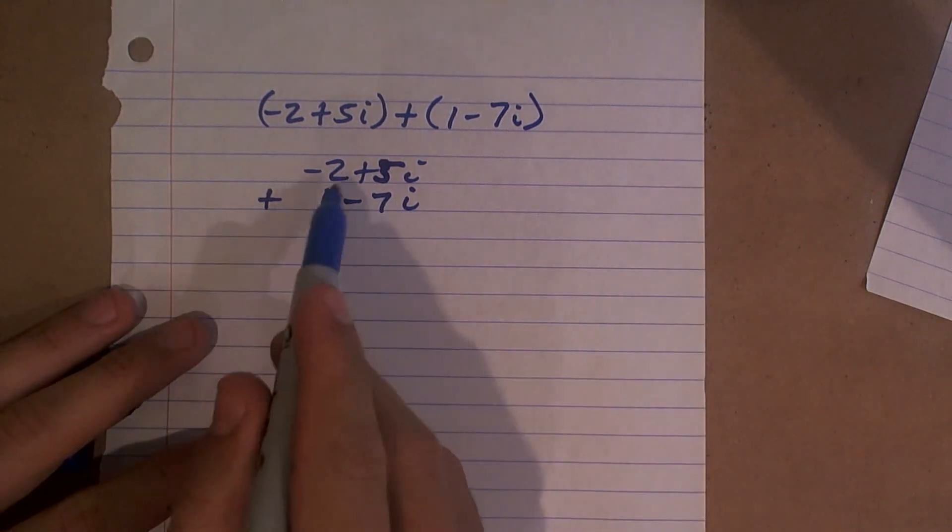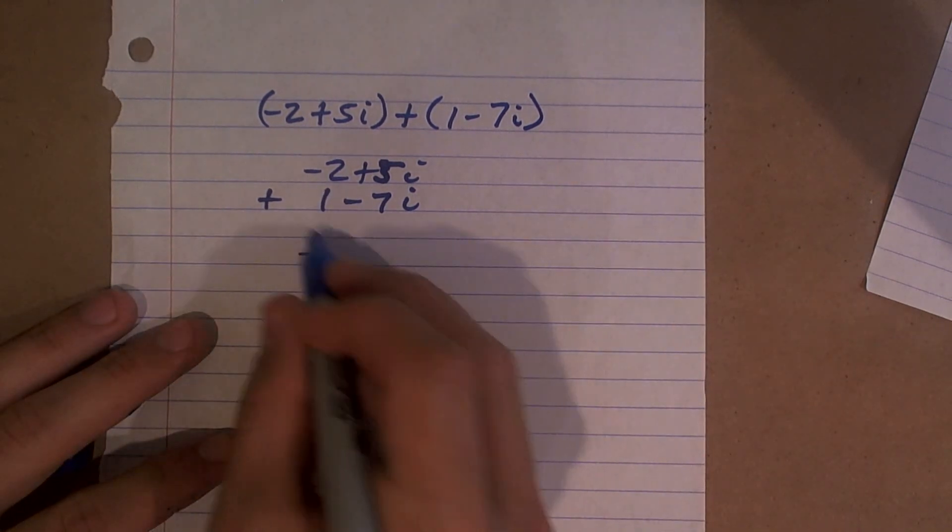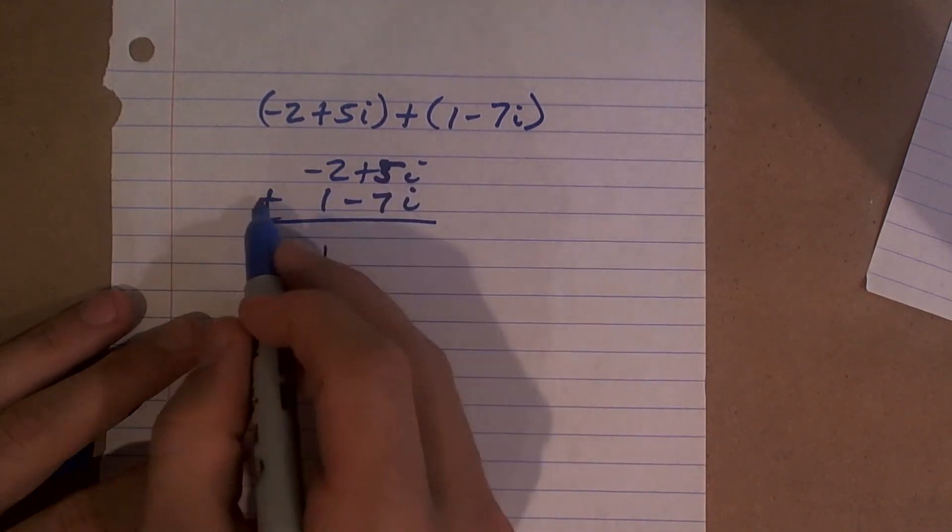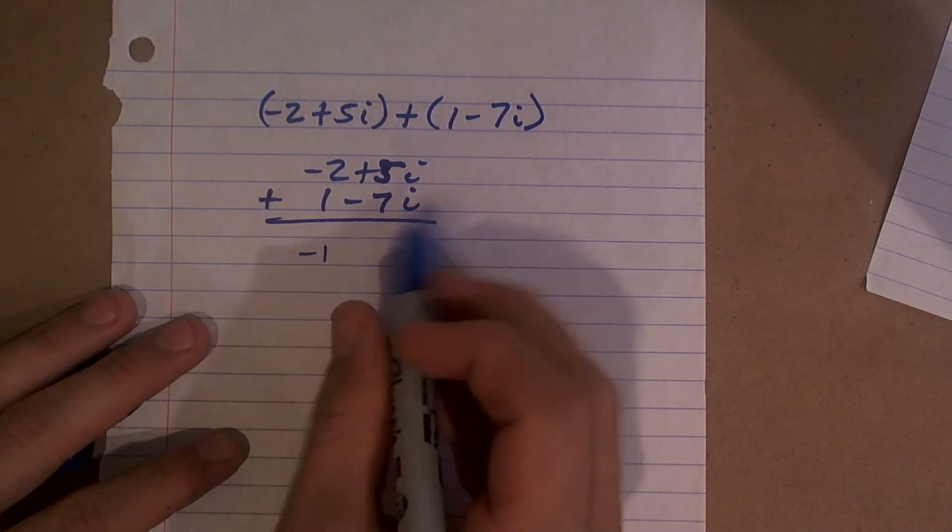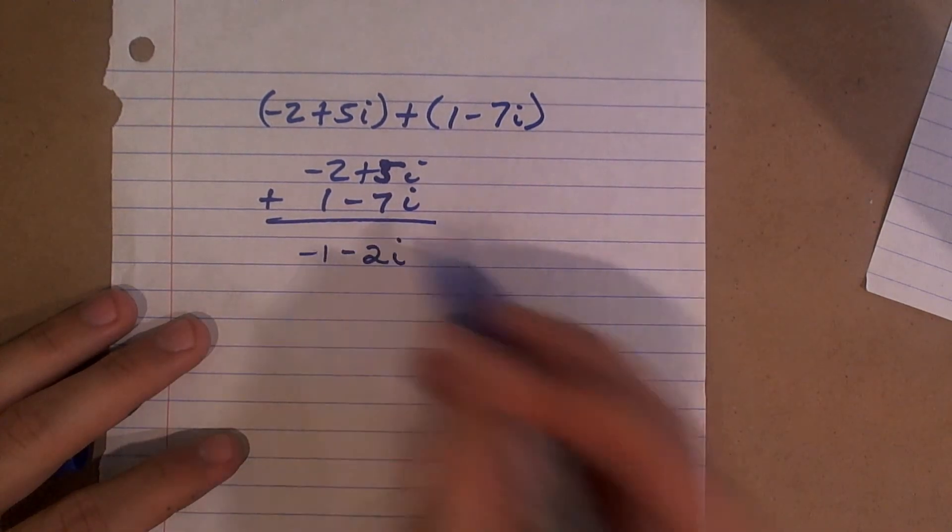The reason why this helps is negative 2 plus 1 we know is negative 1, and 5i plus negative 7i is going to give you negative 2i.